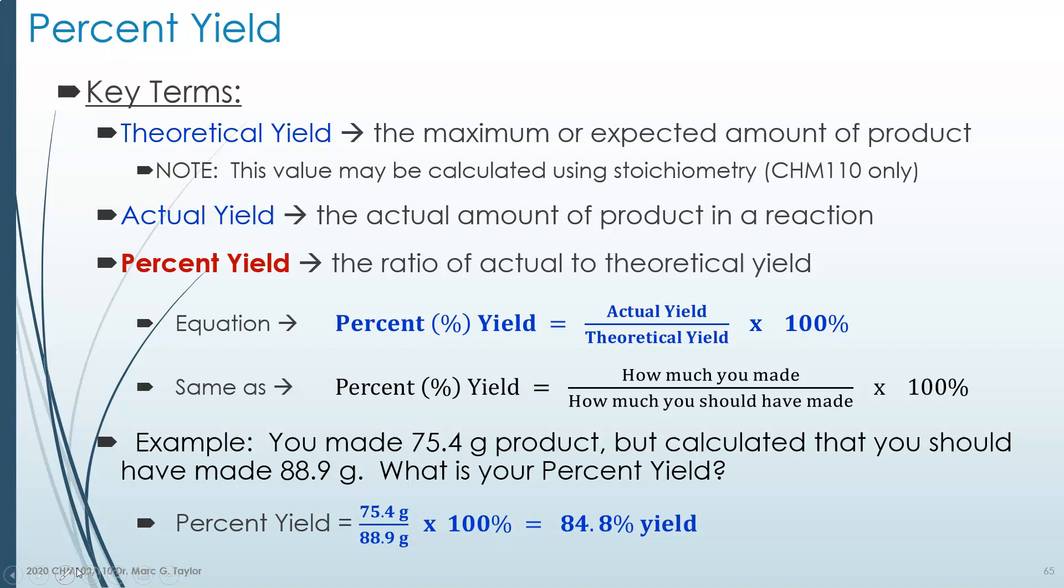Well, what that suggests is that you didn't purify your material well enough, and your 95 grams probably has some impurities in it. You need to clean it up better because you really shouldn't get a yield greater than 100%. It's not theoretically possible.